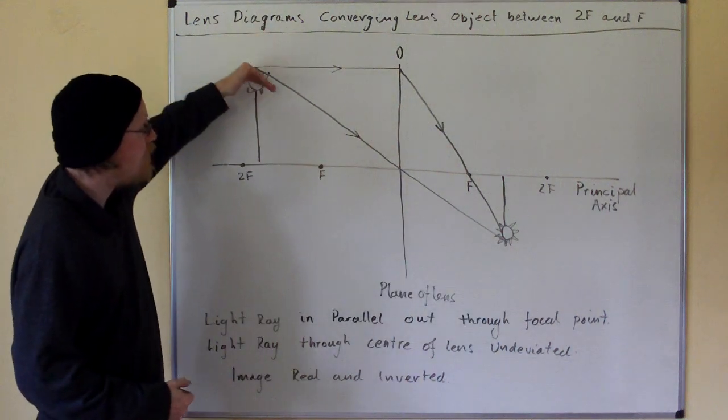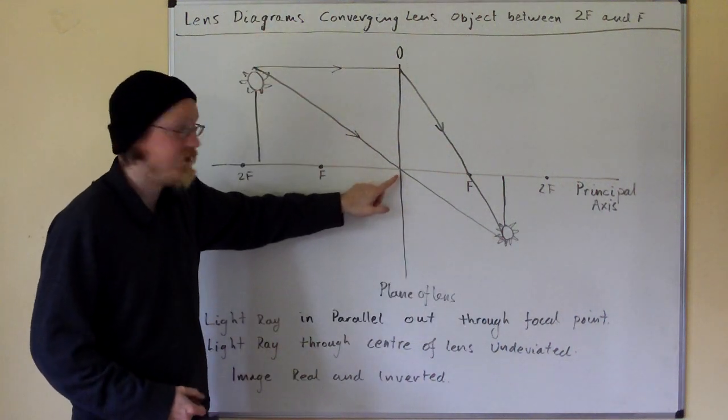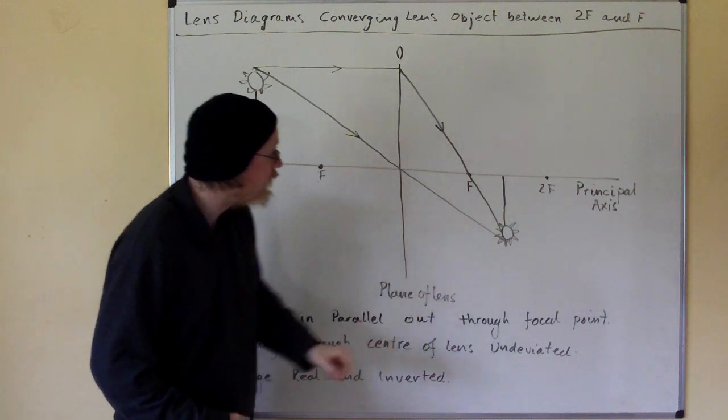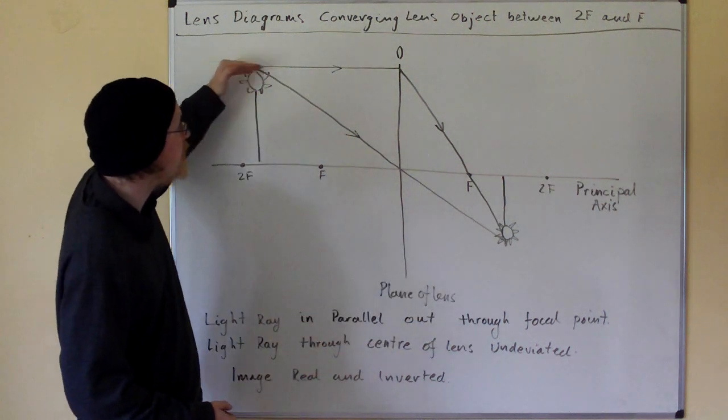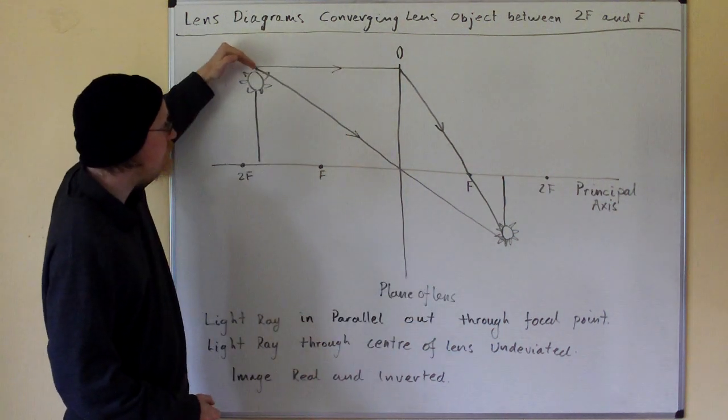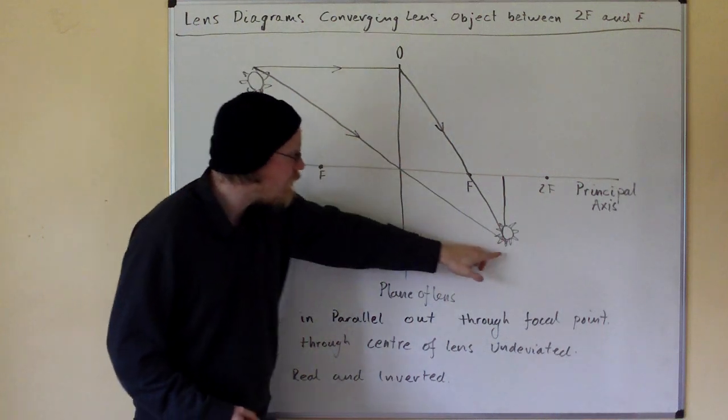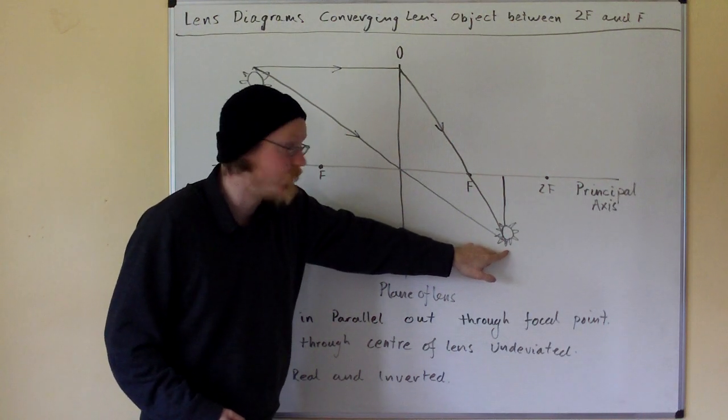The light ray that goes through the centre of the lens is undeviated and carries on. And if you join up the light ray that goes in parallel and the light ray that goes through the centre of the lens, you find where they come together and where the image is formed.